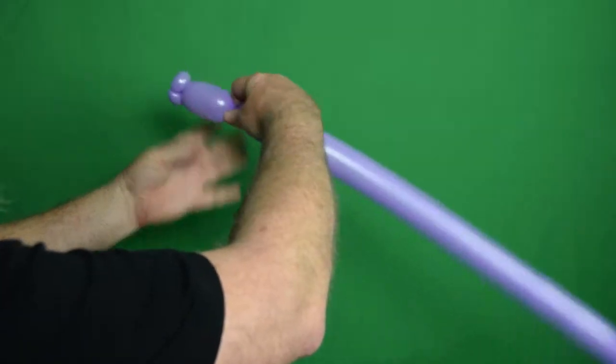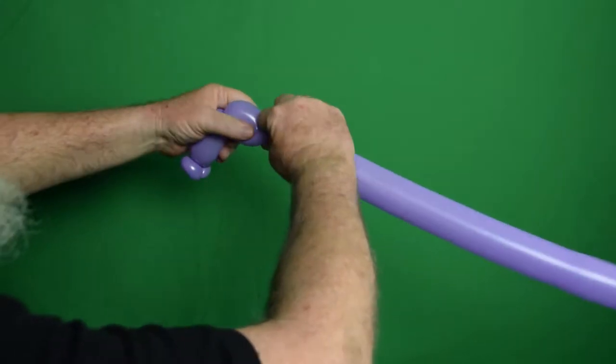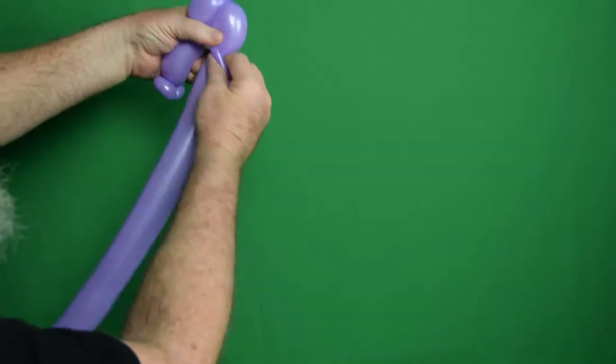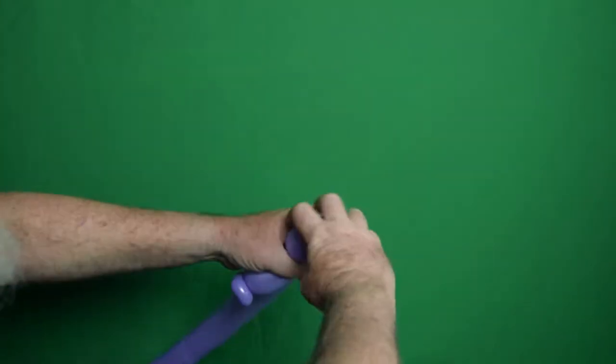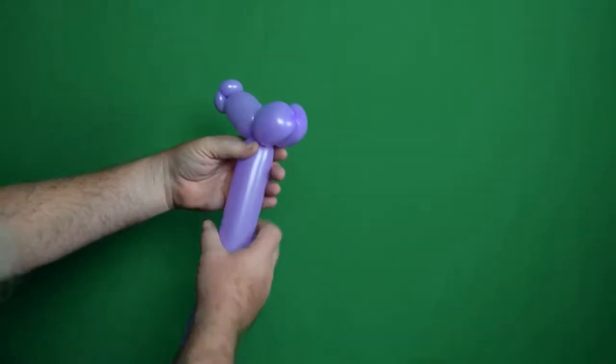Then I'm going to make about a three or so finger bubble, followed by two slightly smaller bubbles, about maybe two and a half fingers. You can see how these are smaller than those. Twist those together, and that's going to be the head of a horse.